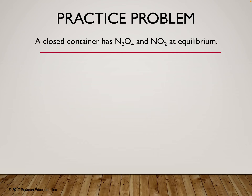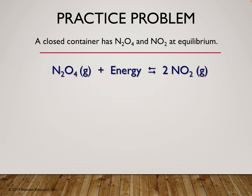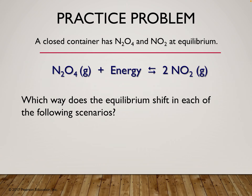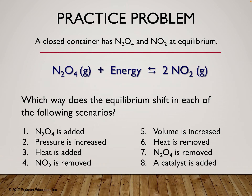Here's a practice problem: a closed container of dinitrogen tetroxide and nitrogen dioxide at equilibrium. I have eight different scenarios and I want you to figure out which way the equilibrium shifts for each. The answers are either left or right. Go ahead and pause here and come back when you're ready to see the answers.